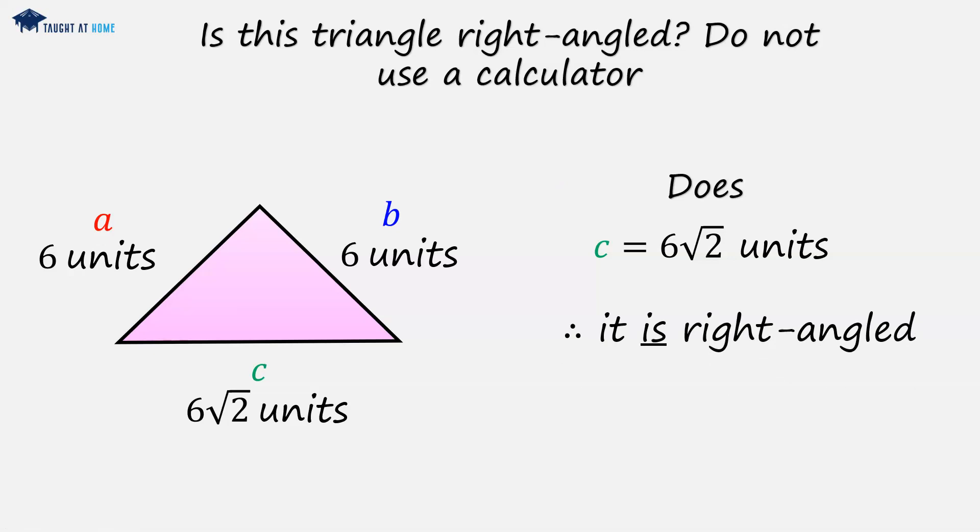And for future reference, when you get an isosceles triangle, so two shorter sides of the same length, and the hypotenuse is that shorter side times root 2, then it is definitely a right angle.